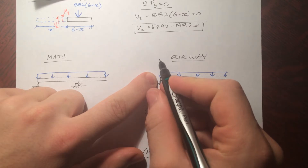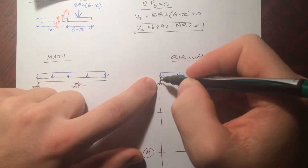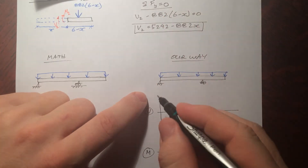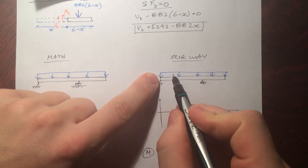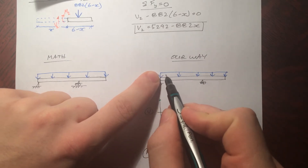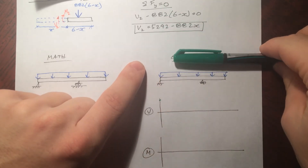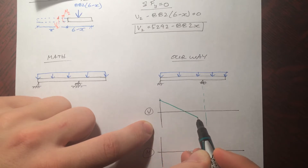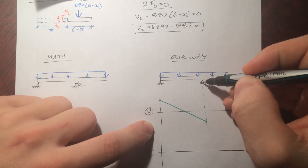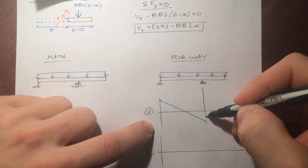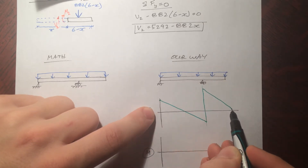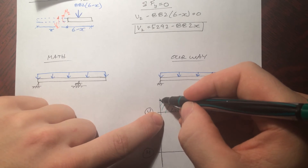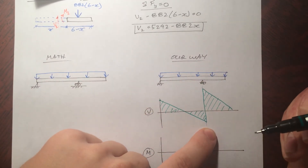Starting at the left end of the beam, we get pushed up by reaction R1. Then as we move along, the distributed load slowly pushes us down linearly. We continue being pushed down until the second support, where that large reaction kicks in, giving a huge upward jump. Then the remaining piece slowly pushes us down again to zero. So the shear force is linear between supports with a large jump at the second reaction.